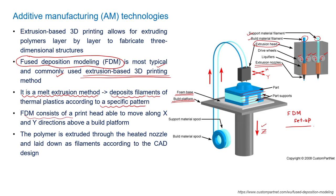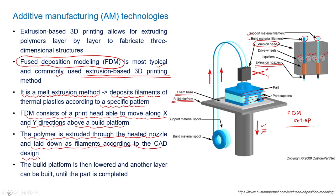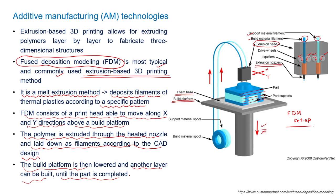The extrusion head can be moved in X and Y directions, and the platform moves in the Z direction. FDM consists of a print head that moves along X and Y directions above the build platform. The polymer is extruded through the heated nozzle and laid down as filaments according to the CAD design. The build platform is then lowered and another layer is built until the part is completed.